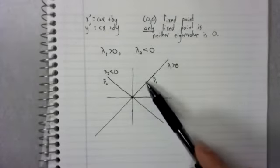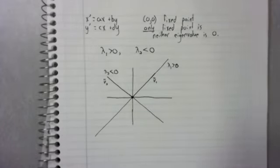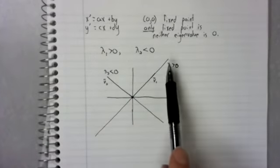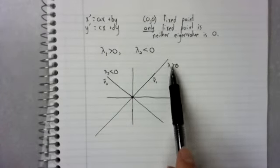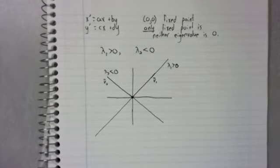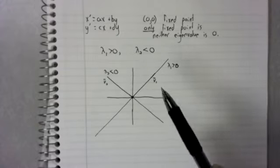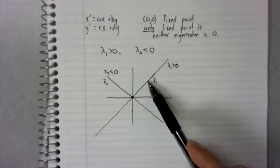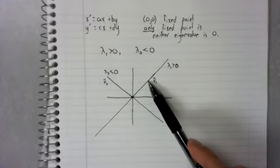These eigenvectors together with these eigenvalues largely control the behavior of the system. The first thing to observe is that an initial value on an eigenvector stays on an eigenvector.